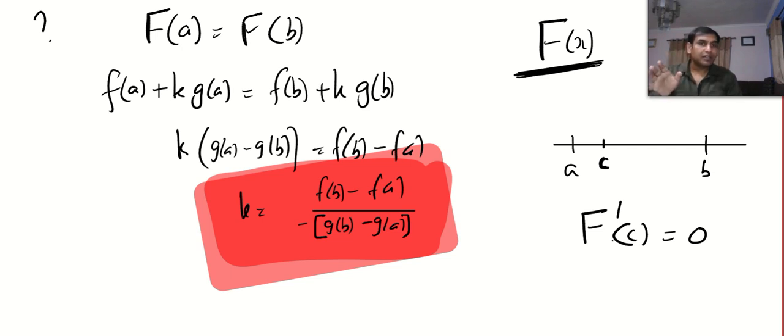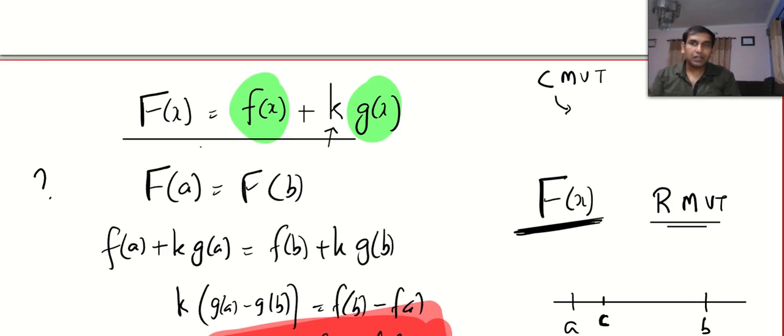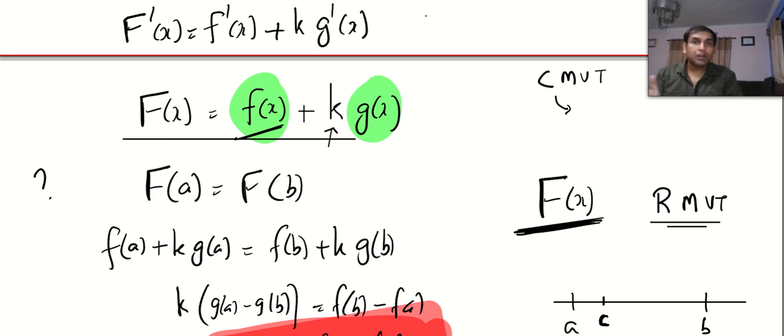Now this is very easy. What is the derivative of capital F? Capital F dash x equal to the derivative of small f is f dash x plus constant into function, you keep the constant differentiate the function. So what will be the derivative at the particular point c?